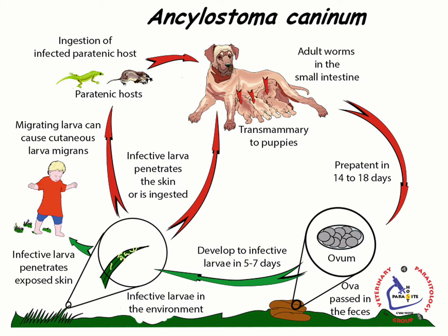This is a simple illustration of the life cycle of Ancylostoma caninum. Eggs are passed through feces and in the environment L3 stages develop. The final host can be infected after ingesting L3 with contaminated food and water. If L3 are ingested by paratenic hosts, they are stored there, and the final host becomes infected after consuming these paratenic hosts.